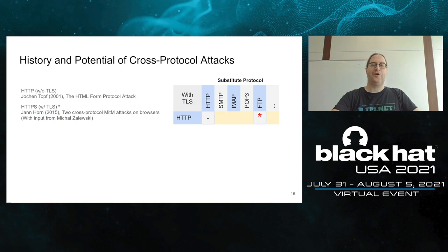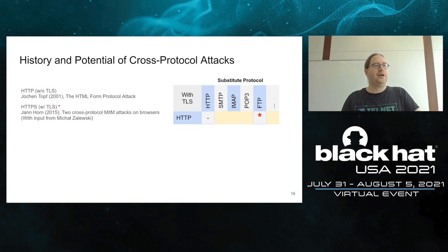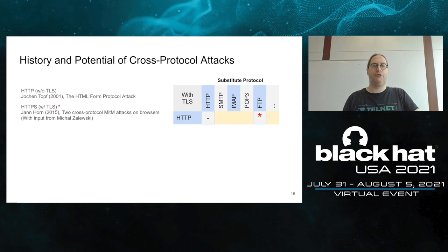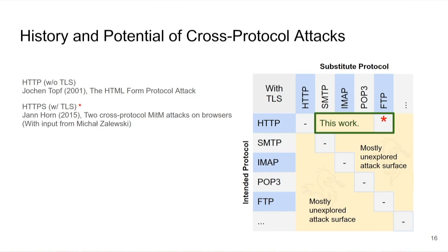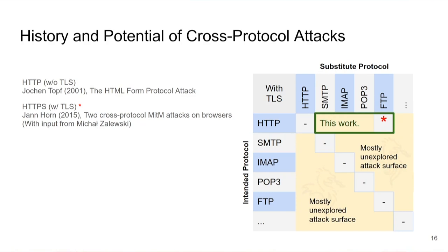Cross-protocol attacks on HTTP without TLS have a long history. The first was published by Jochen Topps HTML form protocol attack in 2001. The first TLS-based cross-protocol attack, to our knowledge, was given by Jan Horn with input from Michael Zalewski in 2015 — a cross-protocol attack on HTTP against an FTP server. In this work, we extended analysis to HTTPS exploiting email protocols SMTP, IMAP, and POP3, as well as FTP. Note that the number of cross-protocol scenarios grows quadratically with the number of TLS-secured protocols.